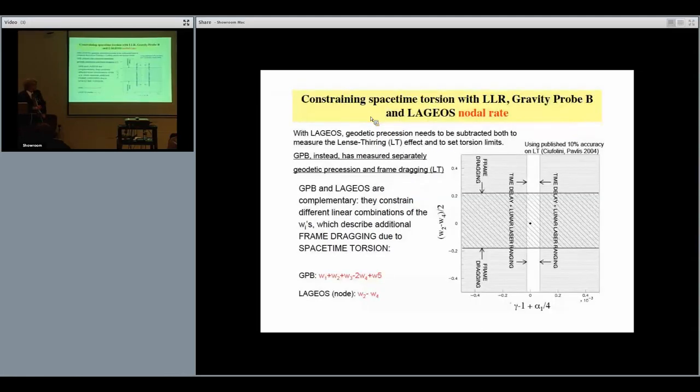Including LAGEOS, we can test also other parameters—the frame dragging parameters. The measurement of frame dragging has been done with LAGEOS and recently with Gravity Probe B. However, the two experiments are very different. Gravity Probe B measures independently the geodetic precession and the frame dragging, so it can separate very clearly the two effects. LAGEOS cannot, so in order to measure frame dragging with LAGEOS you need to subtract the effect of geodetic precession. You need the measurement of geodetic precession by GPB or by lunar ranging. In this sense, constraining torsion with LAGEOS also requires Gravity Probe B and/or the Moon. With LAGEOS you can constrain w2 minus w4. With GPB you can constrain a larger combination of parameters.